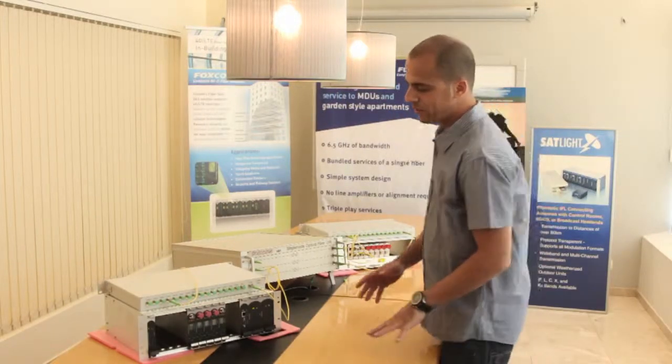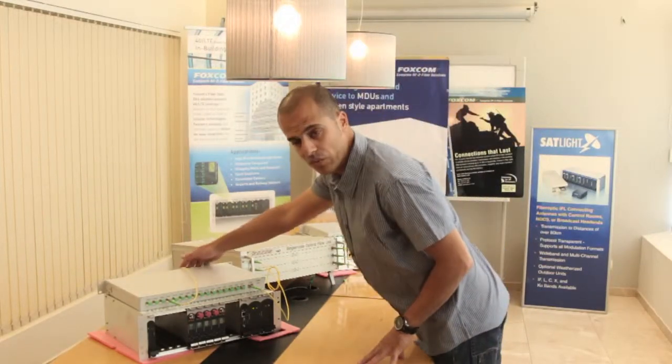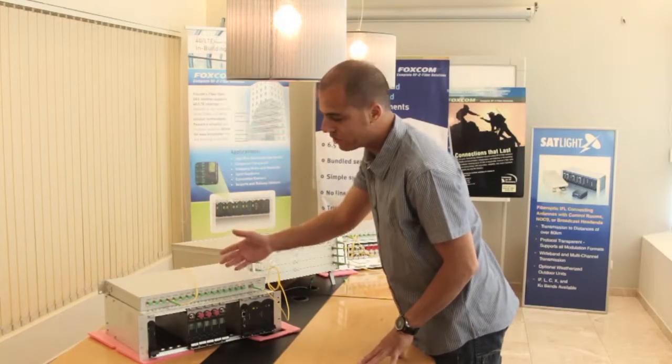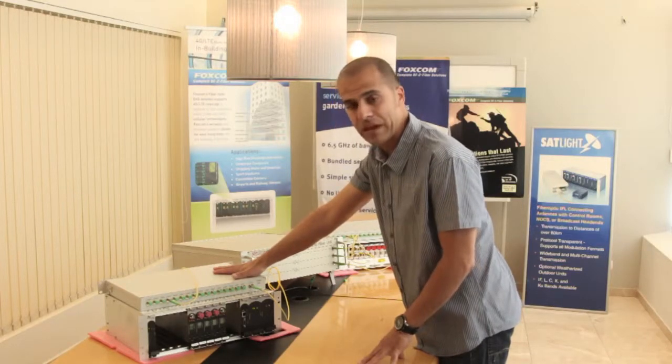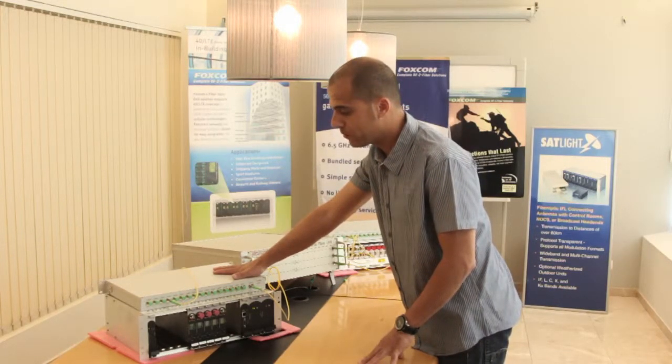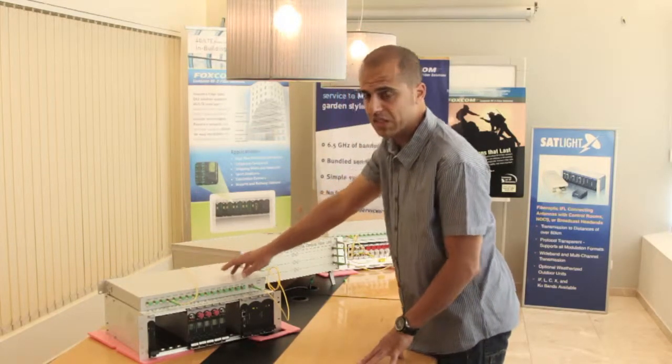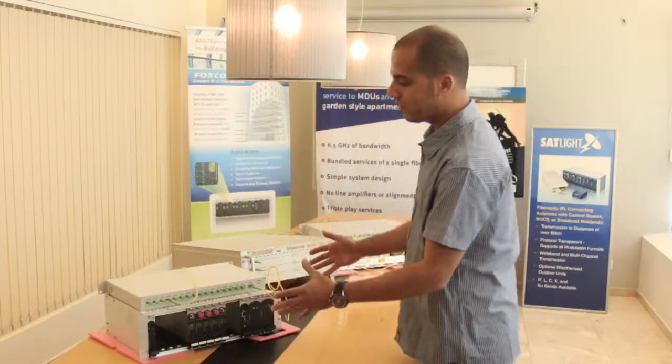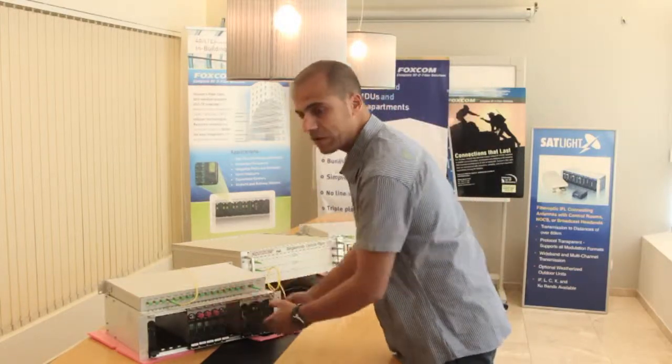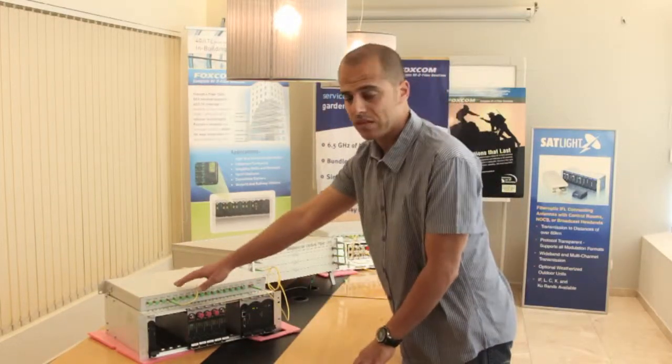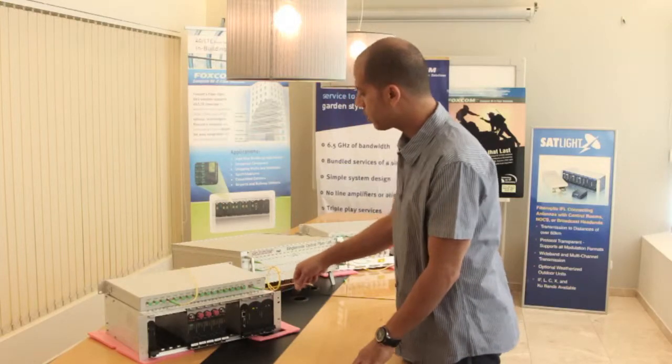What we did here is that the various wavelengths which are produced in the transmitter are being muxed using our passive optical DWDM mux. Basically this unit will pick up all the various wavelengths or light colors from the transmitter and will mix them all together on a single fiber.